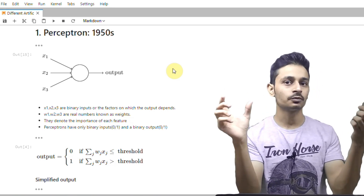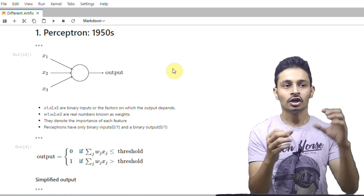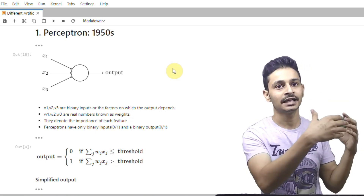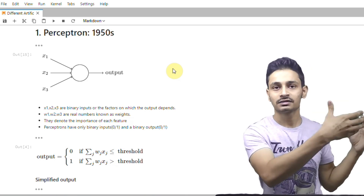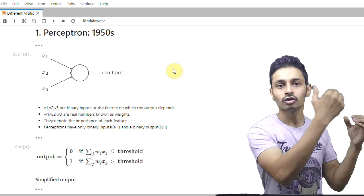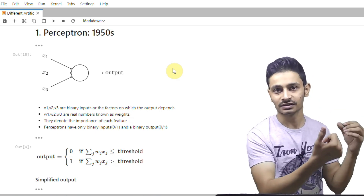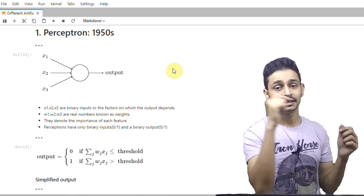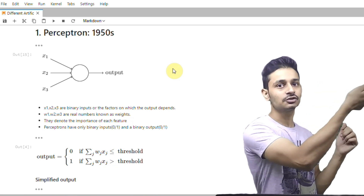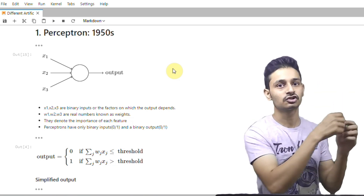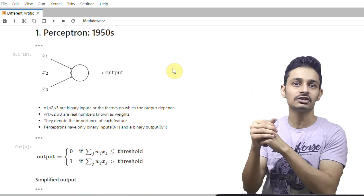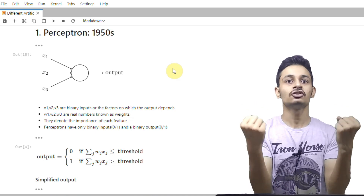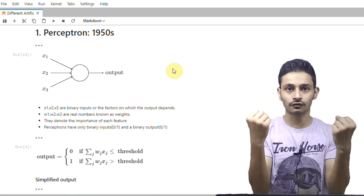For example, suppose that you want to predict if a person has diabetes or not. It will take certain input features such as his weight, his height, and his age — those are the input features x1, x2, x3 and so on up to xn. How important each particular feature is to predict whether a person has diabetes or not — that's what weight denotes. That is, weights denote the importance of each feature.